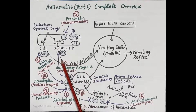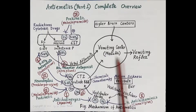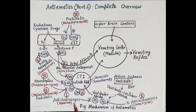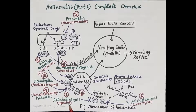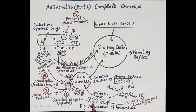Vagal afferents transmit emetogenic impulses to the vomiting center, inducing vomiting. The first category of antiemetics are the anticholinergics — for example, hyoscine, also called scopolamine. Hyoscine competitively antagonizes acetylcholine muscarinic receptors on vestibular nuclei and prevents the transmission of emetogenic impulses due to motion sickness to the chemoreceptor trigger zone.